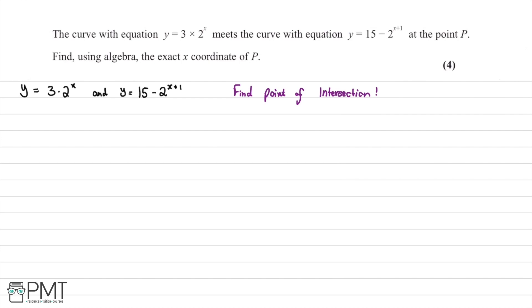In this question, the curve y = 3 × 2ˣ meets the curve y = 15 − 2^(x+1) at point P. We use algebra to find the exact x-coordinate of P. Setting the equations equal: 3 × 2ˣ = 15 − 2^(x+1). We simplify 2^(x+1) = 2ˣ × 2, so 3 × 2ˣ = 15 − 2 × 2ˣ.